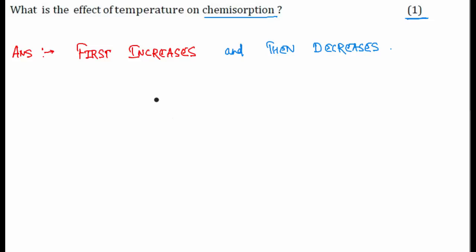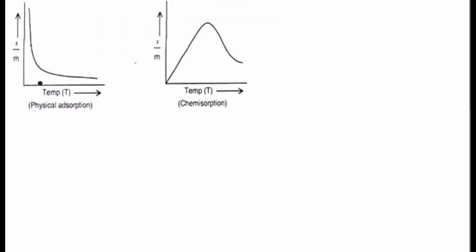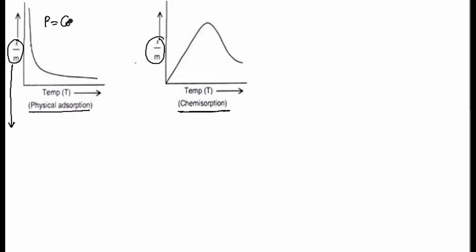Now we will see the logic behind this answer. You can easily understand it from the graph. There are two types of adsorption: one is physical adsorption and one is chemical adsorption or chemisorption. In this graph, x/m represents the amount of adsorbate per unit amount of adsorbent, plotted versus temperature. Here pressure is constant, so we also call it the adsorption isobar.